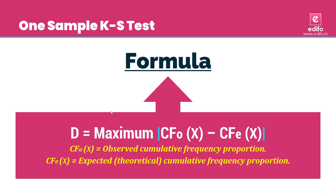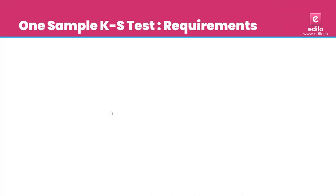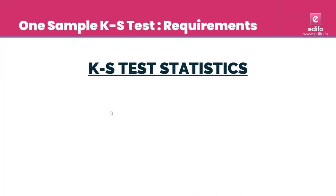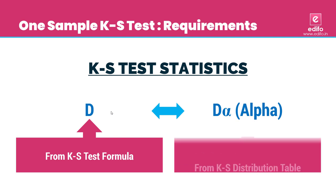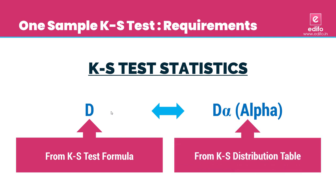We make a decision by comparing the D value with the critical value, D alpha, obtained from the KS distribution table. If the D value is greater than D alpha, we reject the null hypothesis; otherwise, we fail to reject the null hypothesis.